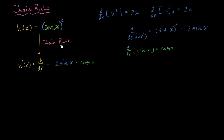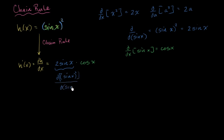And so there we've applied the chain rule. It was the derivative of the outer function with respect to the inner: the derivative of sine of x squared with respect to sine of x is 2 sine of x. And then we multiply that times the derivative of sine of x with respect to x. So let me make it clear — this right over here is the derivative: we're taking the derivative of sine of x squared with respect to sine of x, then multiplying by the derivative of sine of x with respect to x.